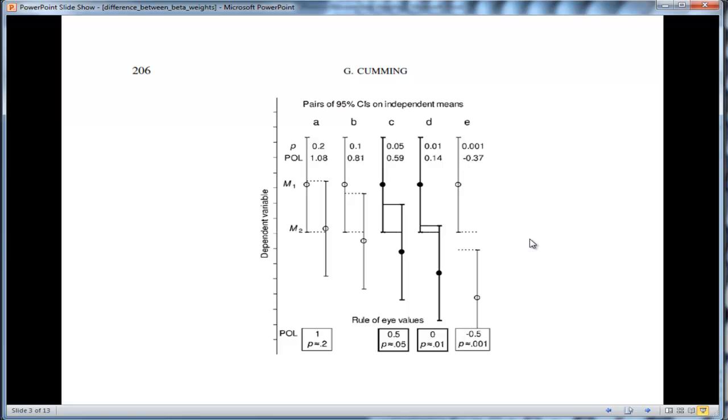And what Cumming showed in a really insightful graph, looking at the difference between point estimates which are means, he showed when you do an independent sample t-test and you get the 95% confidence intervals for mean 1 and mean 2, the two dots are mean 1 and mean 2, and we can see that there's overlap between the confidence intervals.